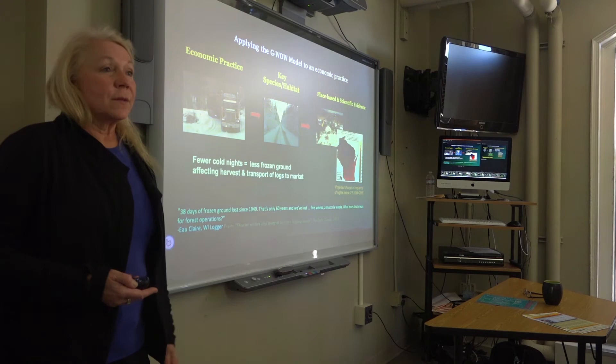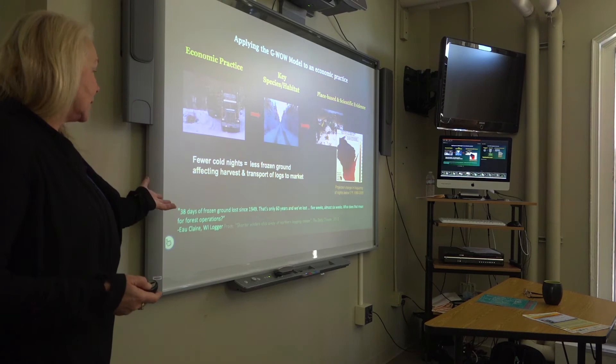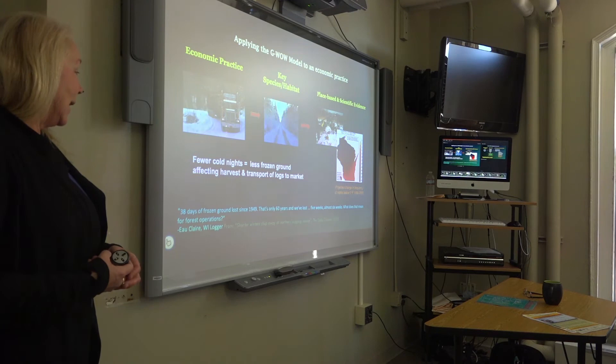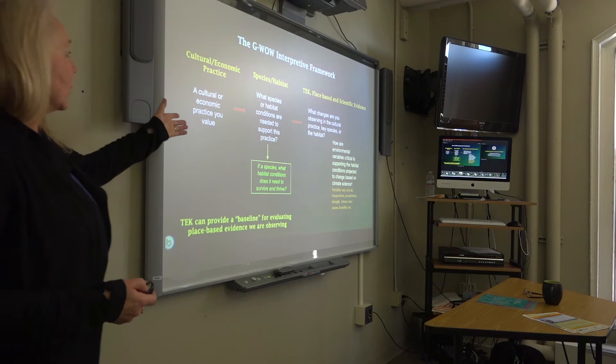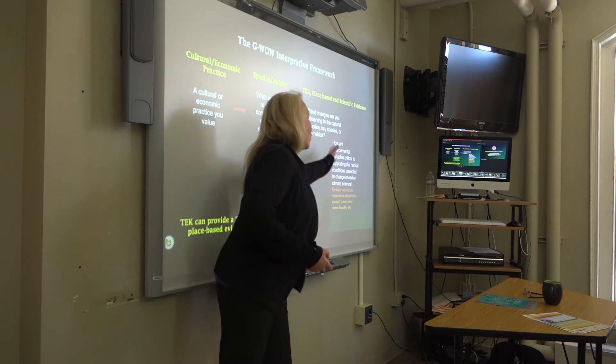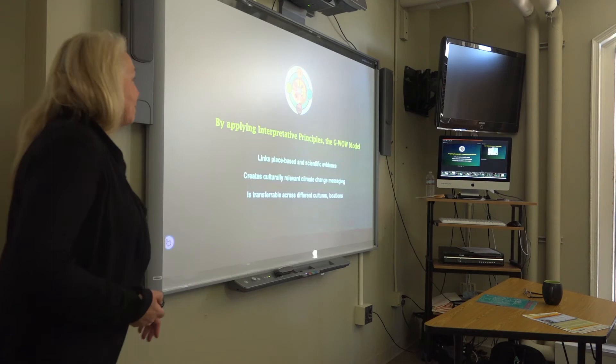This is an economic practice with a similar scenario: winter logging. I use this example when speaking to more conservative audiences — loggers get it. They need frozen roads to get their logs out in wintertime. What they're finding is that swamps and wet areas are soft, and they're dropping in their skidders, unable to get logs out. We use winter temperature maps showing increased temperatures and lack of cold nights to freeze the roads. So less frozen ground, less harvesting of logs, less money to the family and business. We even have place-based quotes from a logger who's been logging since 1949 — 38 days of frozen ground lost. Would that make climate change come alive to you? This is the framework of the entire interpretive model: relate, reveal, tell the whole, and then ask for action.